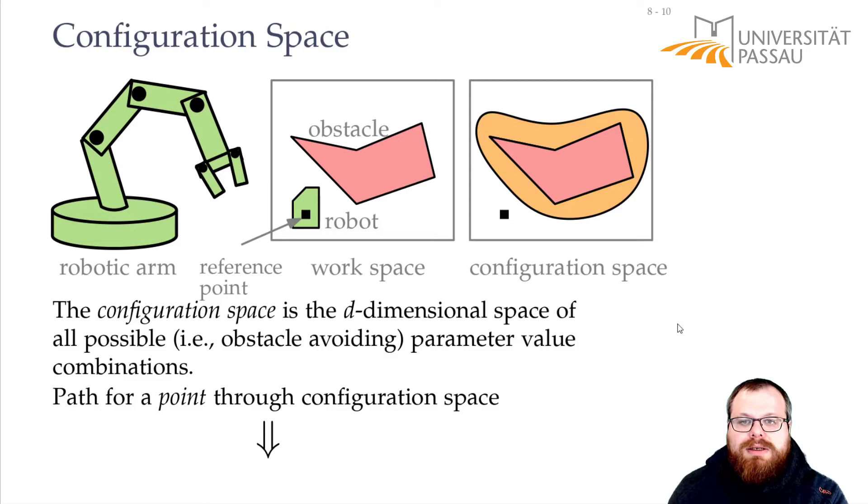For an example, if we have the 2D polygonal robot, then we have three positions here. In the origin, at this position it doesn't intersect the obstacle, and at this position it does intersect the obstacle. Now how should the configuration space look like?